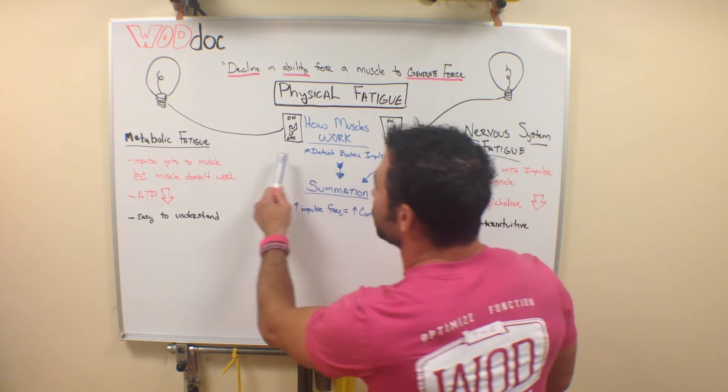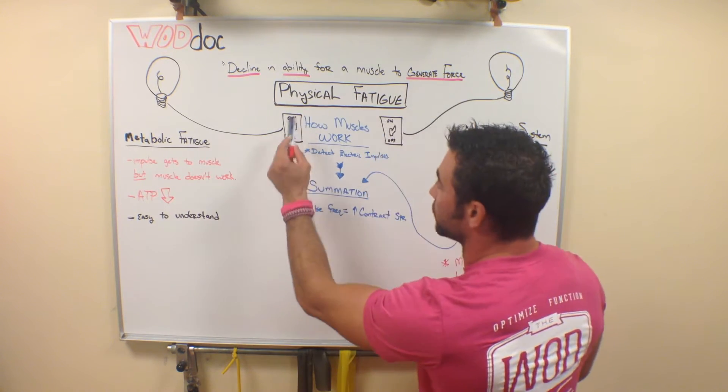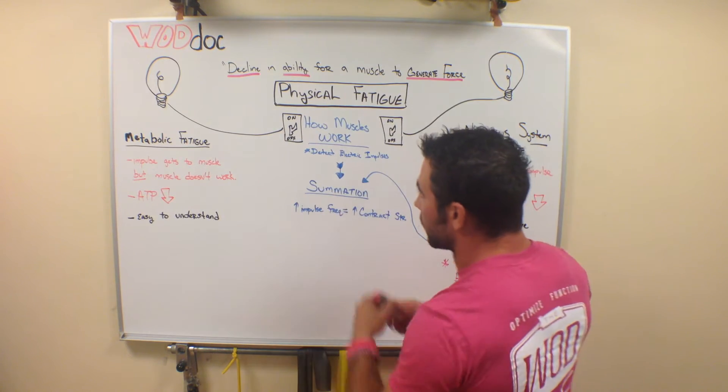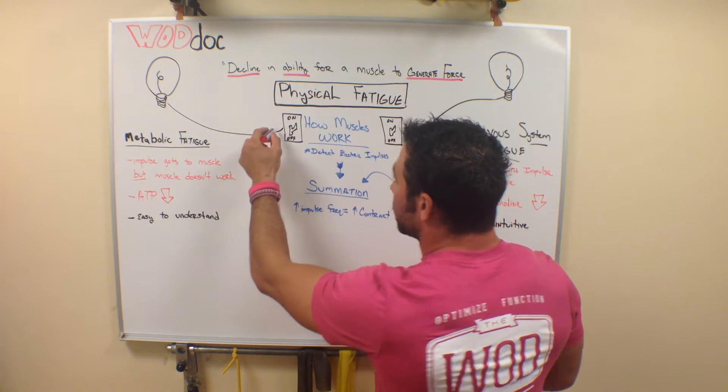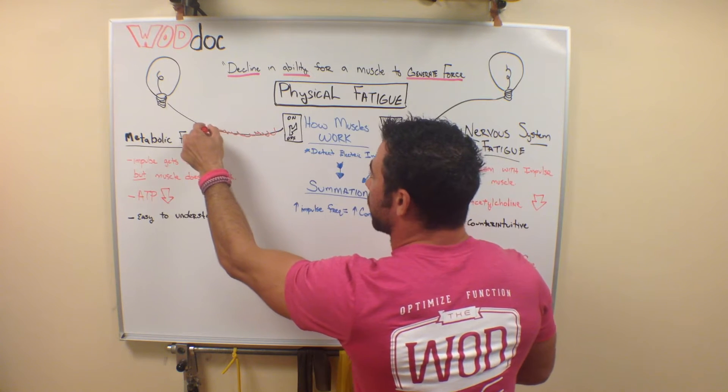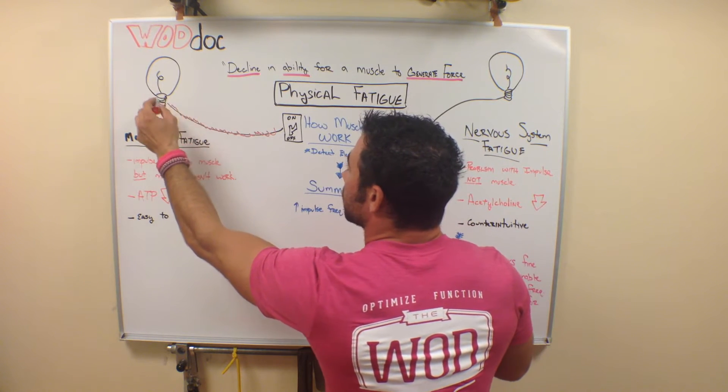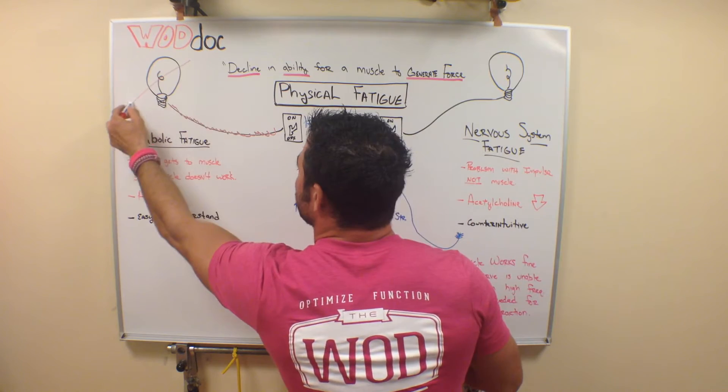So let's move on over here. Let's look at this example. If I have a light switch, the light switch is my brain. If I flip the light switch on, and that electrical impulse goes up to the light bulb, but the light bulb doesn't work,